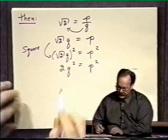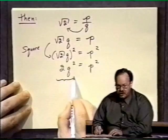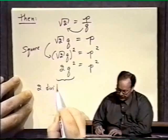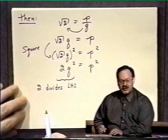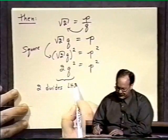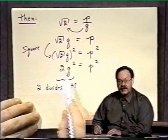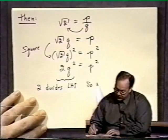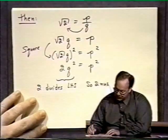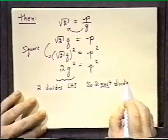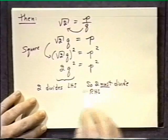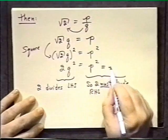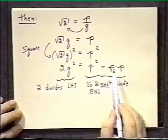Now here's our first observation. Notice that 2 divides the left-hand side. Since it divides the left-hand side, it must divide the right-hand side. But the right-hand side here is p squared, which if I were to expand it, is p times p. So where would the 2 divide? It must therefore divide into p.